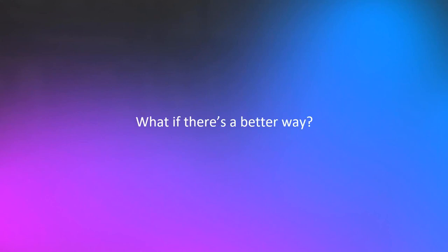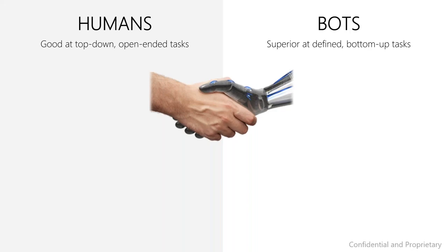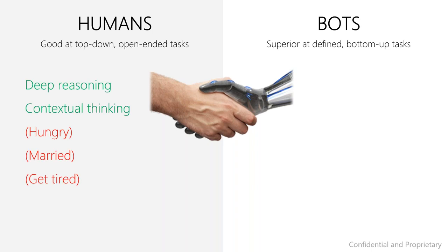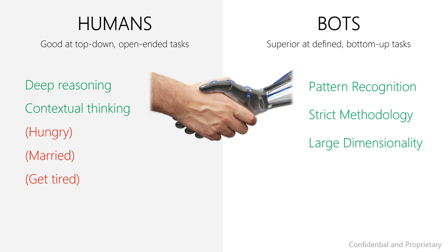Let's ask ourselves: what if there's a better way to harness technology for the root cause analysis process? As of today, humans are better at top-down or open-ended questions — for example, 'where should I open my next branch?' — but they don't scale; they get tired and hungry. On the other hand, machines are superior at rigorous and exhausting tasks such as tracking sales in every state sliced by affiliates and alerting when something changes. Machines are good at pattern recognition, following strict methodology, and handling large dimensionality. We wanted to build software that takes advantage of both worlds.